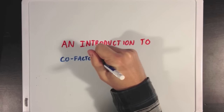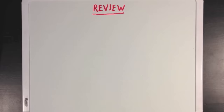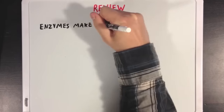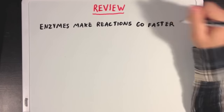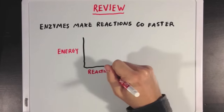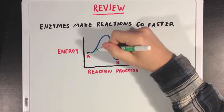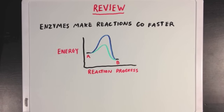Today, we're going to talk about cofactors and coenzymes, and how sometimes they can be essential to proper enzymatic function. But first, let's review the idea that enzymes make reactions go faster, and they do this by lowering the activation energy peak of their respective reactions.